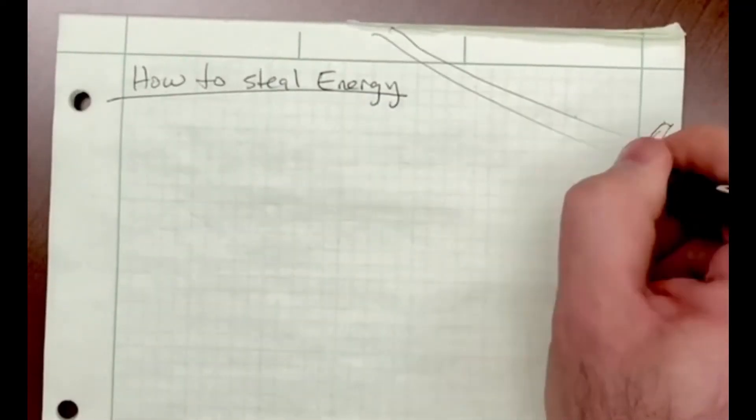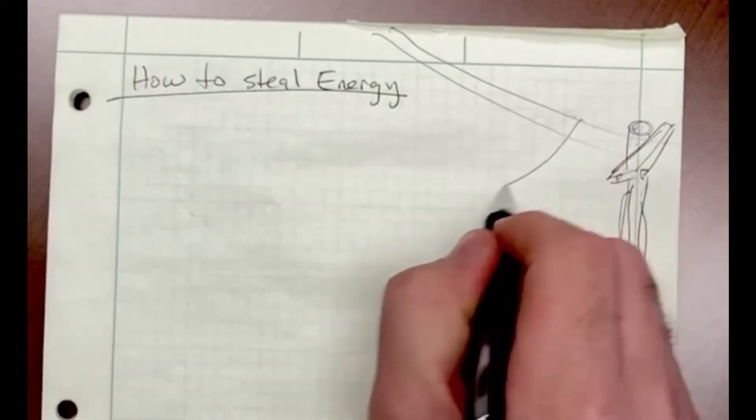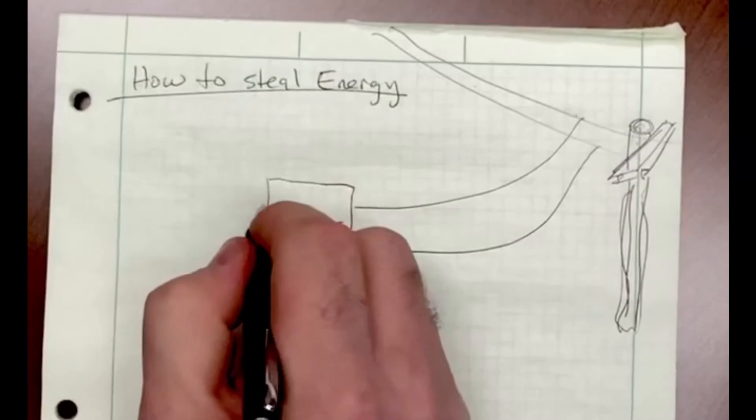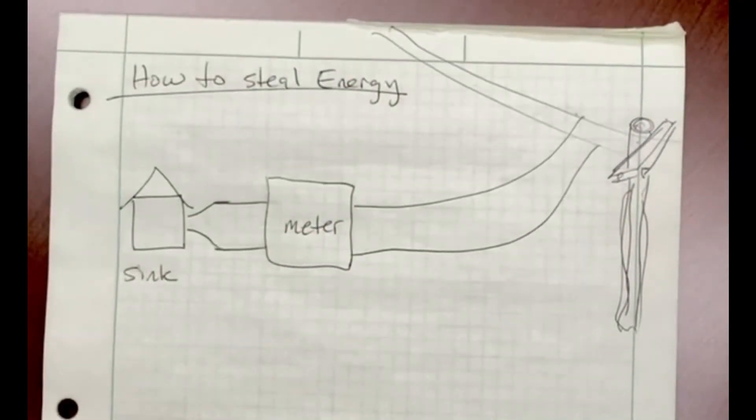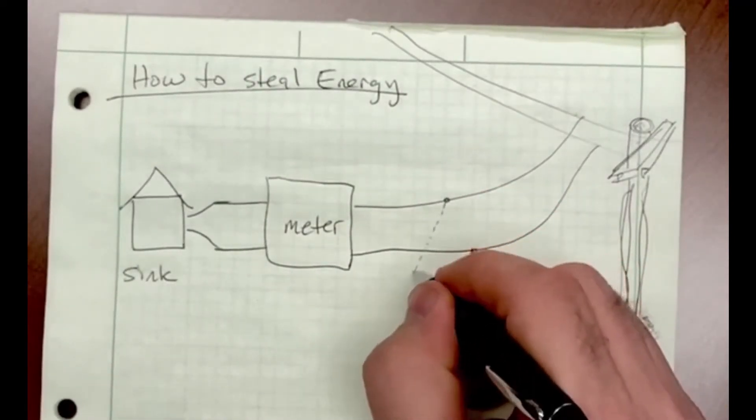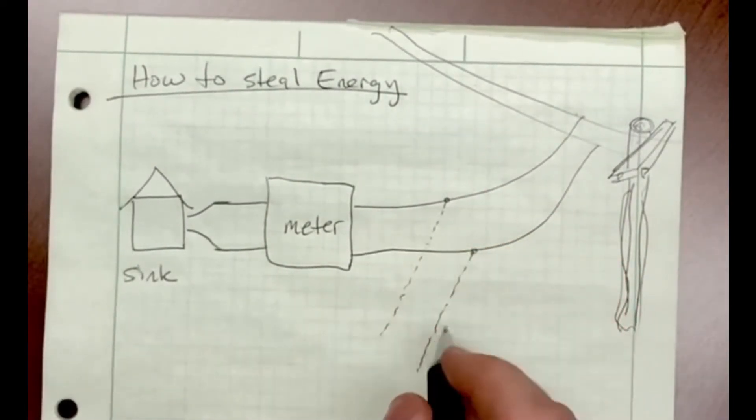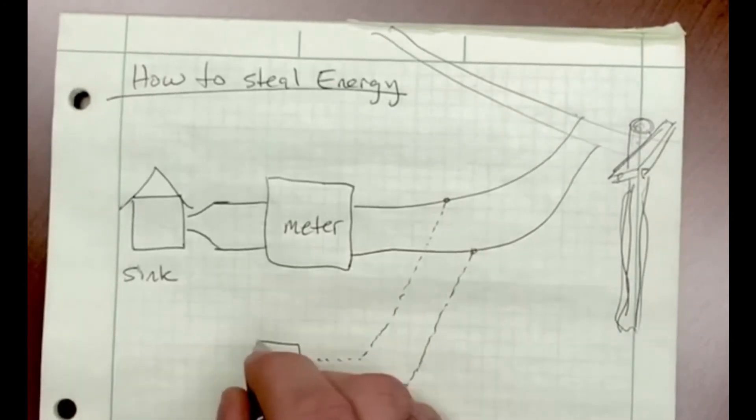How to steal energy. This is something that goes on around the world, especially in poorer countries. Again, what we might have is a home, a meter, and that meter might be physically mounted on the outside of one of the walls of the home, like it is in the United States, mostly in the backyard or something.